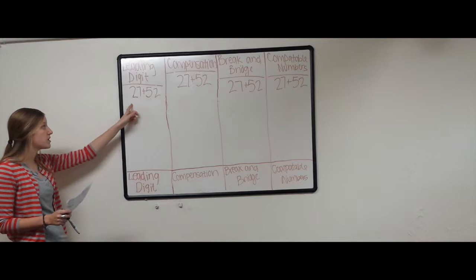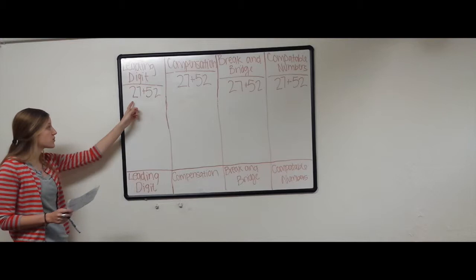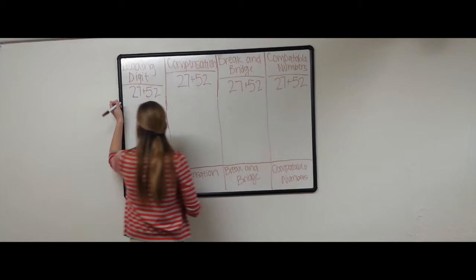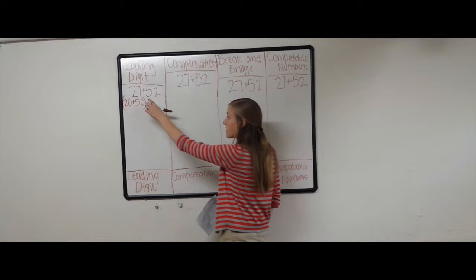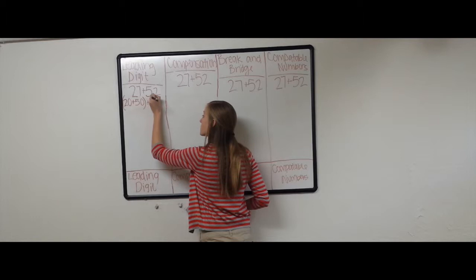So let's start with leading digit. For leading digit, we're going to break apart our problem, 27 plus 52, into its place values. So the 27 and 52, we're going to turn into 20 and 50, and I'm going to put parentheses around it just so it's a little easier to read. So then we have our 7 and 2, 7 plus 2.